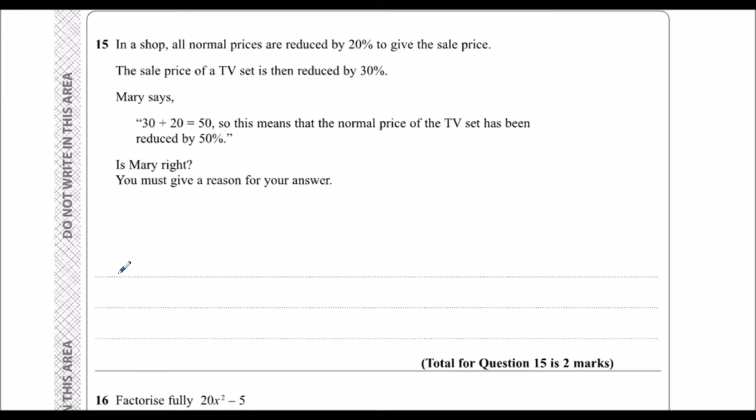Mary is wrong. Now, why is she wrong? If you start with 100% and you take off 20%, that leaves you with 80%. So if you had something selling for 100 pounds, you take off 20 pounds, it's now selling for 80 pounds.